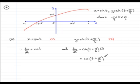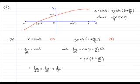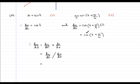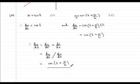Now the next thing is to find dy/dx. We should know that dy/dx using the chain rule equals dy/dt multiplied by dt/dx. Some people like to think of this as dy/dt divided by dx/dt. So we have dy/dt which is cos of t plus pi upon six, divided by dx/dt which is cos t.